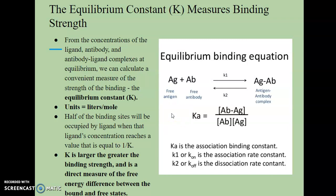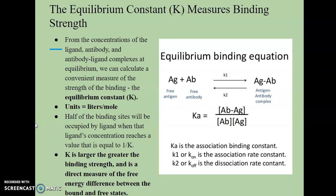So the equilibrium constant is larger, the greater the binding strength. So our K value will be a higher number, the larger the K value means that the greater the binding strength. And this is also a direct measure of the free energy difference between the bound and the free states, between the ligand and the protein.